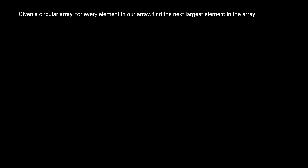In this problem, we're given a circular array. For every position in our array, we have to look to the right and find the first element that is larger than the number at that position — we'll call this the next largest element. For any element where the next largest doesn't exist, we return negative one. A circular array means the array wraps back around to the beginning, so the next element of the last element is the first element.